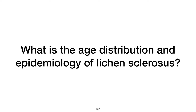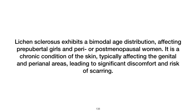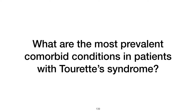What is the age distribution and epidemiology of lichen sclerosis? Lichen sclerosis exhibits a bimodal age distribution, affecting prepubertal girls and peri- or postmenopausal women. It is a chronic condition of the skin typically affecting the genital and perianal areas, leading to significant discomfort and risk of scarring.